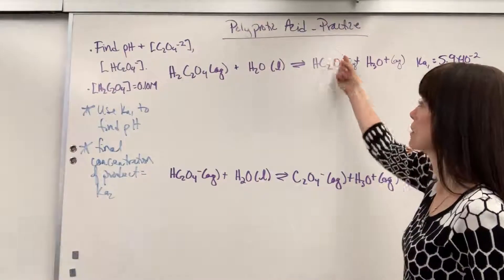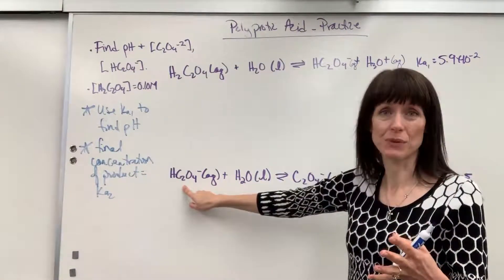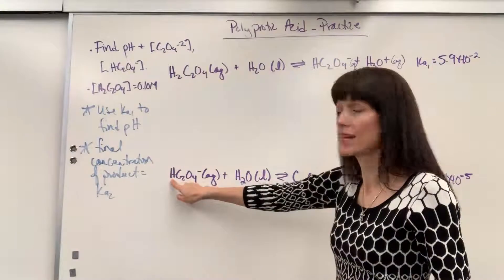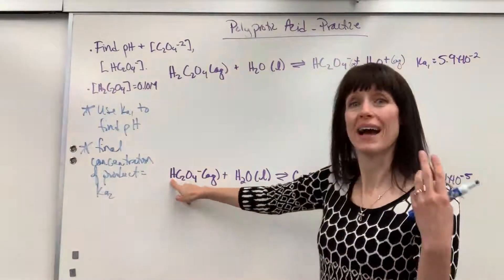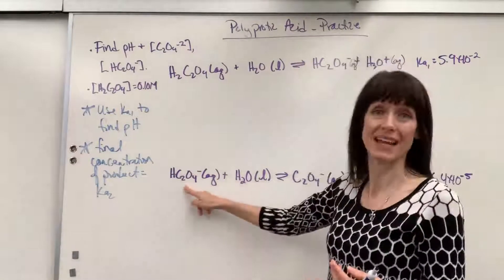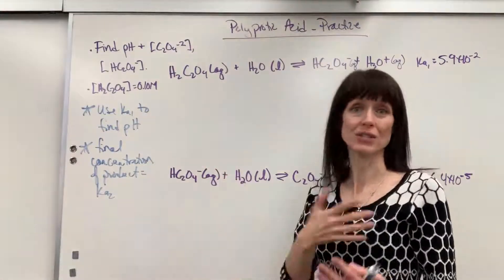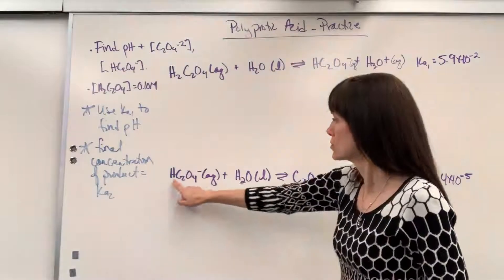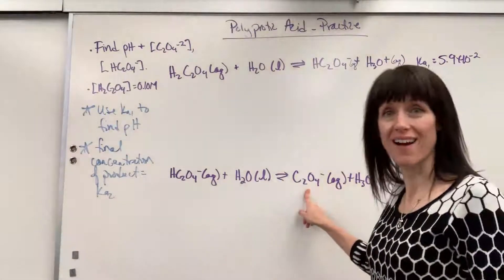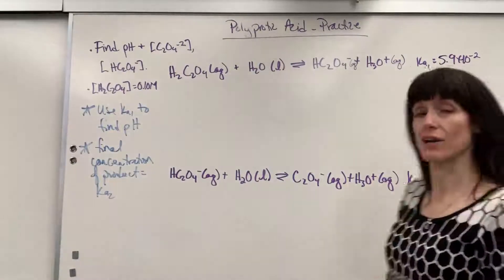This species is going to be amphoteric. It is a conjugate base, but when we rewrite it, it's going to do its own reaction with water to donate — lose that second hydrogen — and act like an acid. So it's a conjugate base in the first reaction, but an acid in the second: amphoteric. It donates that second hydrogen to produce an oxalate ion and the hydronium again.